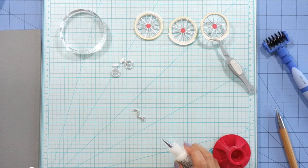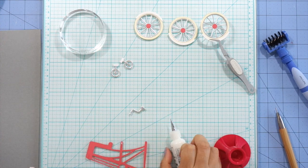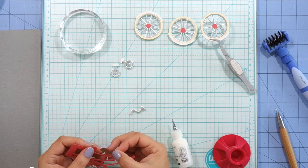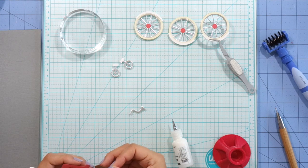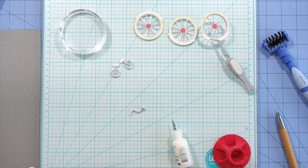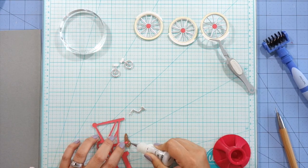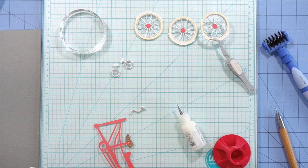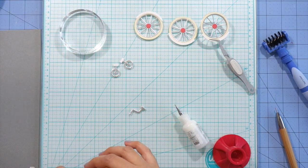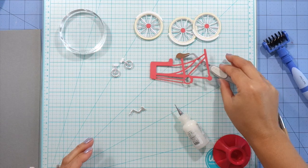And then next I will bring over the body of the tricycle and I'm going to glue on the seat. Again I only had to die cut the seat once because there's the front side and a back side, so I just glued on the front side and I'm going to glue on the back side as well.